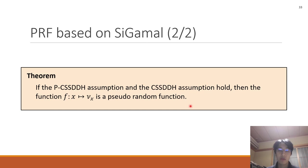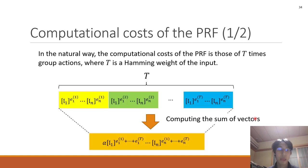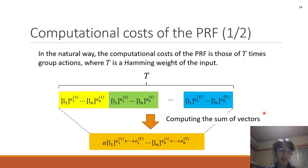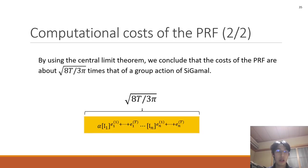And finally, I explain the computational costs of our proposed pseudorandom function. In a natural way, the computational costs of the PRF are those of T times a group action, where T is the Hamming weight of the input. But before computing these group actions, by computing the sum of vectors, we can reduce the computational costs. By using the central limit theorem, we conclude that the costs of the PRF are about √(8T / 3π) times the cost of a single group action of C-GAMMA.